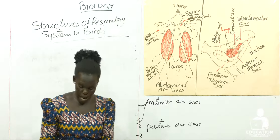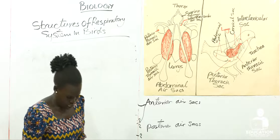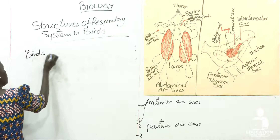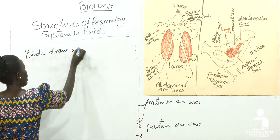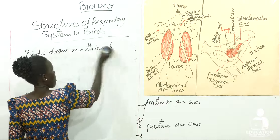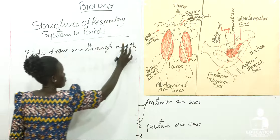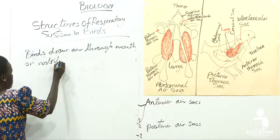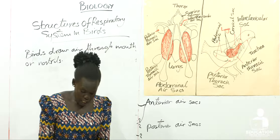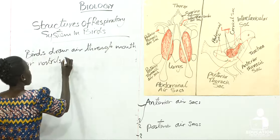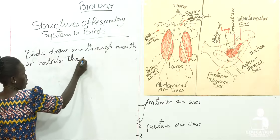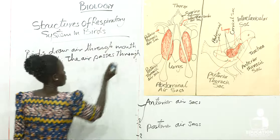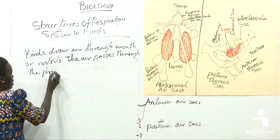So how do birds breathe? Birds draw air through the mouth or nostril. When this air is drawn in, the air passes through the pharynx.